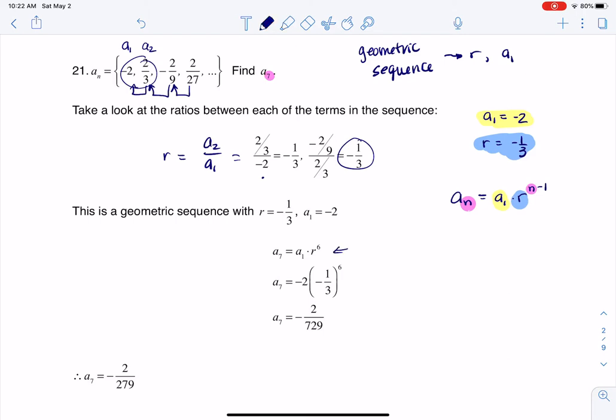So that's what you see me doing in this equation. I plug all of that information in, and then when I solve for a_7, I get negative 2 over 729. All right. Thanks so much.